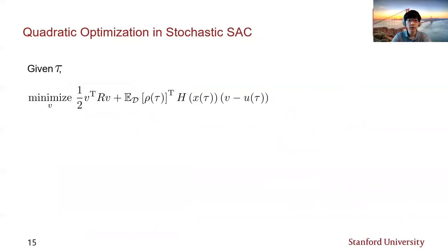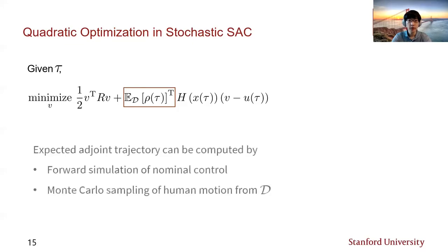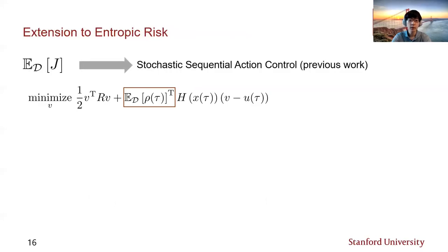This is what each quadratic optimization looks like in stochastic SAC. The first term is a quadratic control cost that appears in the optimal control cost function. The second term is a fine in perturbation v, which depends on the expected value of the adjoint variable rho that is of the same dimension as robot state x. This expectation can be computed by Monte Carlo sampling, where each adjoint trajectory is induced by the corresponding forward simulation of the nominal control schedule and sampled human motion from distribution d. Now, this quadratic optimization is for the particular case where we have the expected value of the receding horizon cost as our original objective.